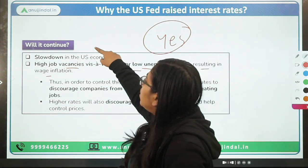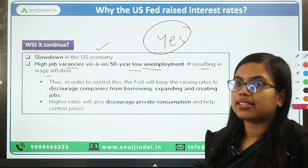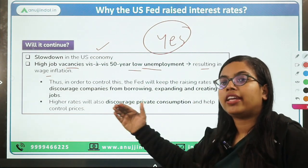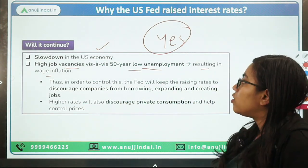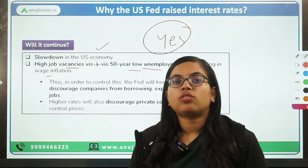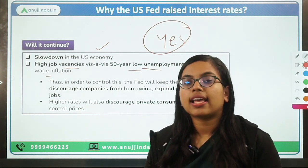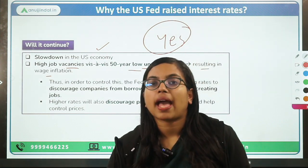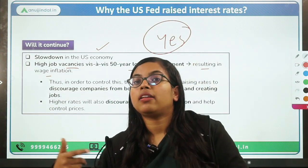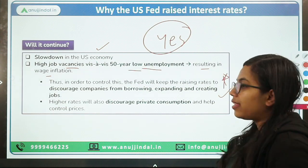Apart from that, there has been a slowdown in the US economy. So the US Federal Reserve has been hiking the policy rate. The purpose behind hiking this rate is to discourage companies and corporates from taking further loans and borrowings to expand more jobs, to expand their operations, and thereby creating more job vacancies. This is the motive behind the US Federal Reserve.